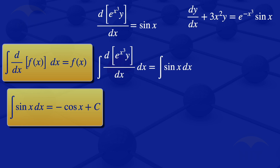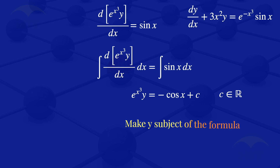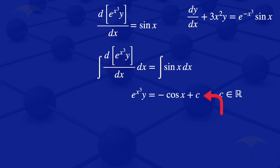Our equation becomes: exponent of X cubed multiplied by Y is equals to minus cosine X plus C, where C is a real number, the constant of integration. To make Y the subject of the formula, we divide this equation by exponent of X cubed, giving Y is equals to minus cosine of X divided by exponent of X cubed plus C multiplied by exponent of minus X cubed.